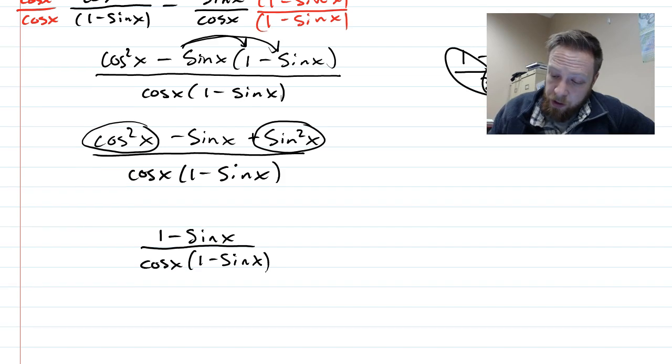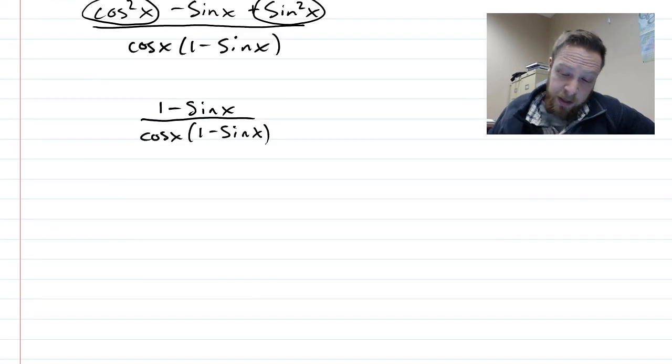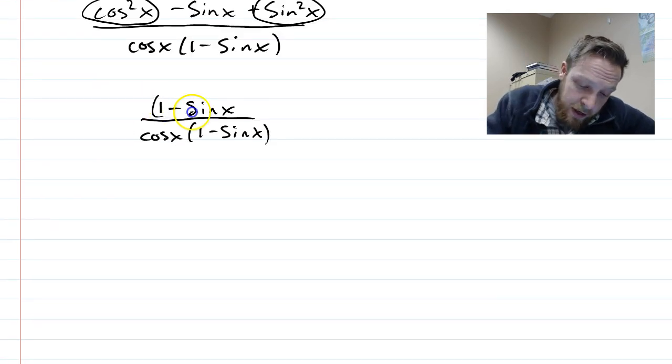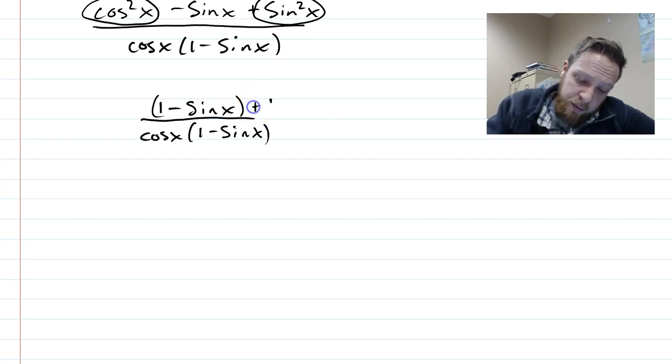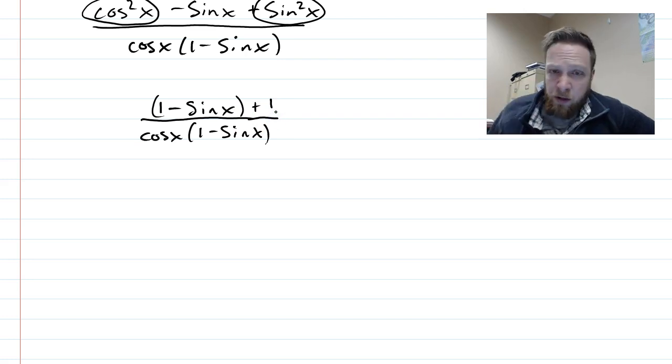Now at this point, we are able to do some canceling. The thing is that we can cancel binomials if we have the same exact binomial on top and on bottom, and that's the only thing there. What would complicate this is if I put like a plus one on top, because then I have more than just the chunk up there.